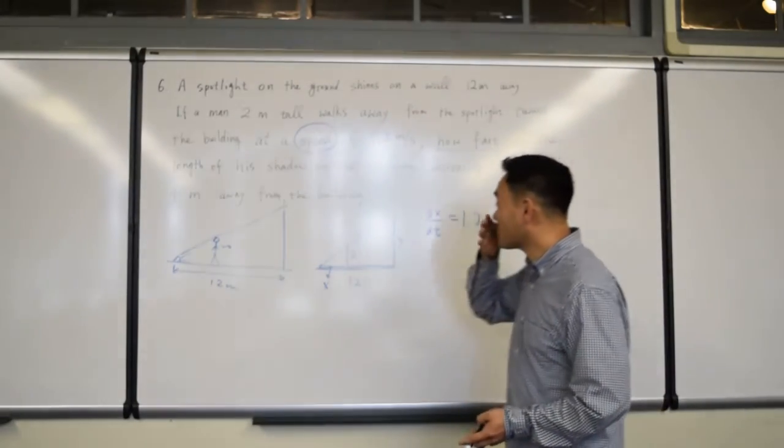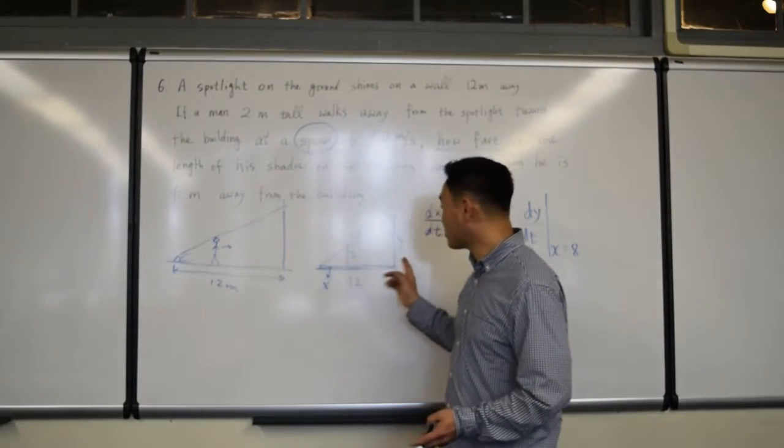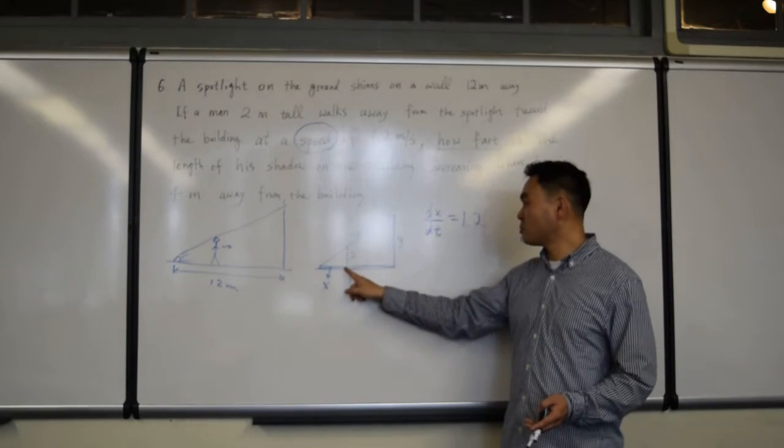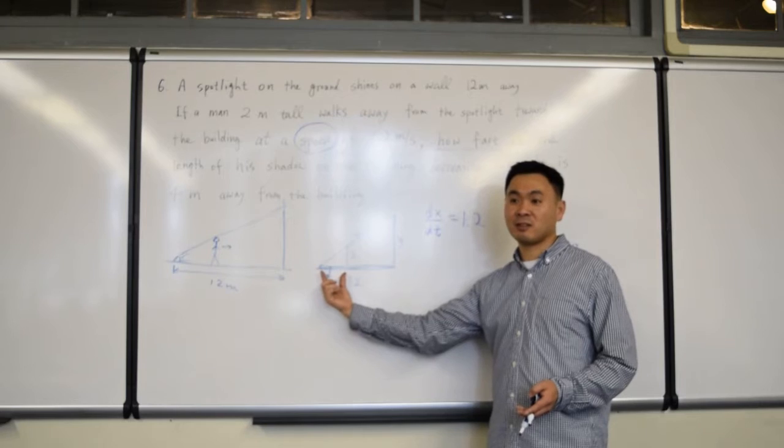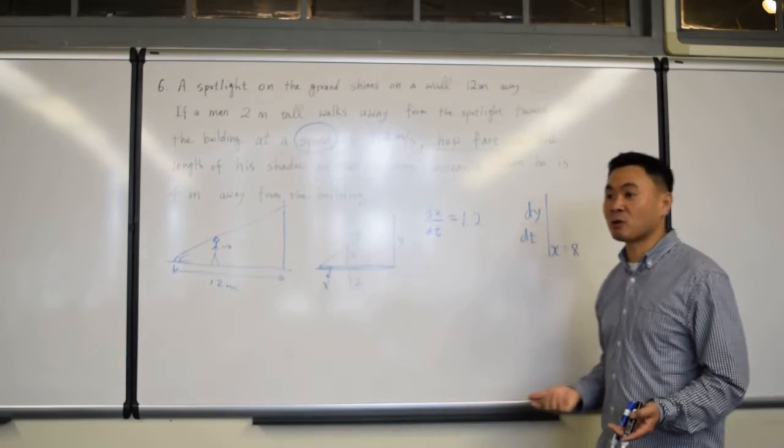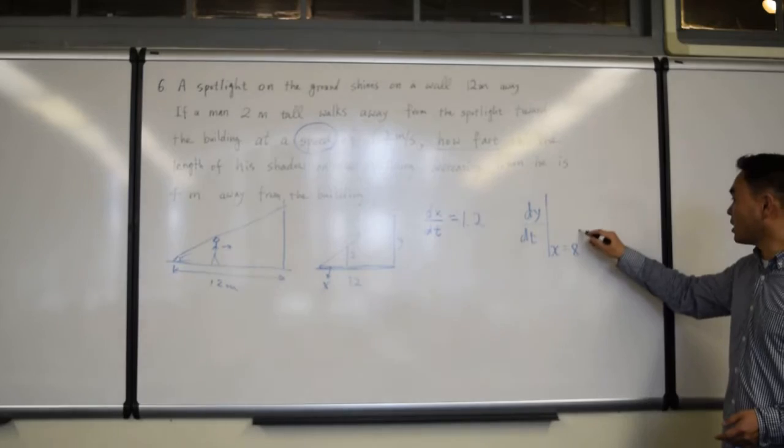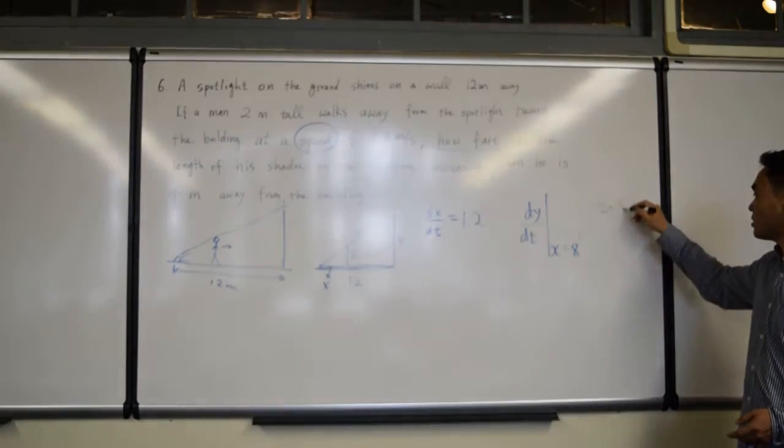So, if you read the question carefully, he's 4 meters away from the building, so his position with respect to the building is 4. So, what is this length then? 12 minus 4, which is 8, okay? So, this here is obtained by 12 minus 8.